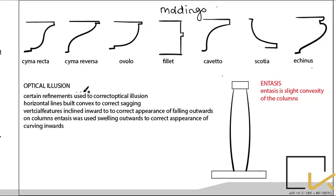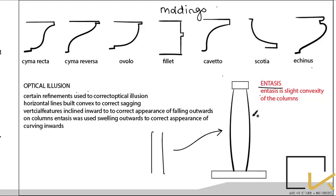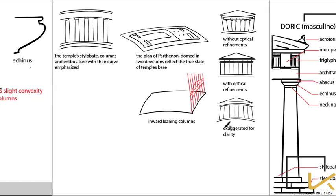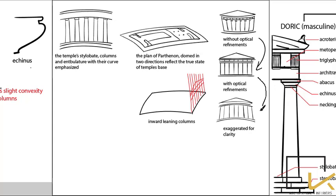Greek temples were mainly known for their correction of optical illusion. The Greek column was not perfectly straight — it was slightly convex. This convexity of the columns is known as entasis. The stylobate and entablature also had a slight curve to correct optical illusion. Without these optical refinements it would appear distorted, but with them the temple looks perfectly normal.